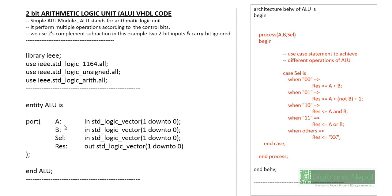The entity `alu` consists of inputs A and B, a selection input `scl` for operation selection, and `result` as output. This is the basic entity of the 2-bit ALU. In the architecture, the foundation of the ALU is the same for 2-bit or higher-bit designs, though higher-bit implementations may include registers or generics. This is the very basic foundation of the arithmetic and logical unit.